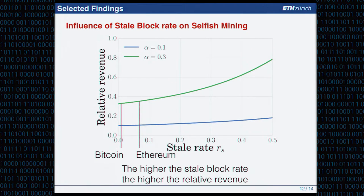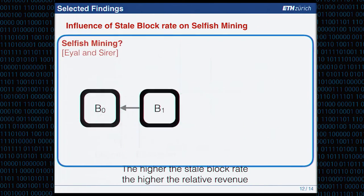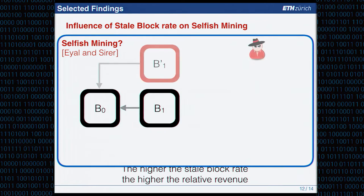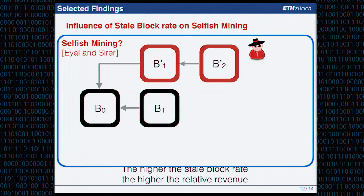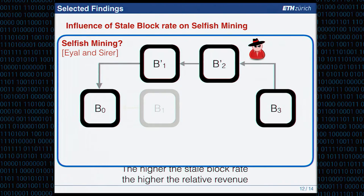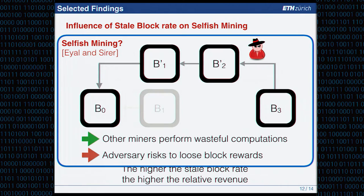Regarding selfish mining: the idea, proposed by Eyal and Sirer in a seminal paper, is that an adversary mines a hidden block without publishing it, then publishes it at a strategic moment, canceling out blocks published by the honest network and gaining more block rewards. The other miners perform wasteful computations and lose block rewards. The adversary also has a risk — losing block rewards if not fast enough in propagating or finding blocks — so it's not always a rational strategy.